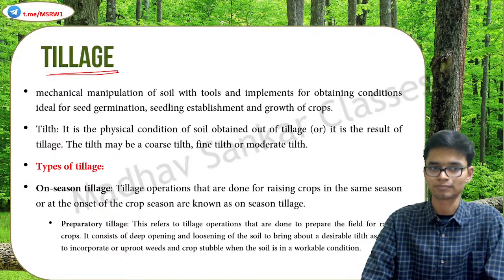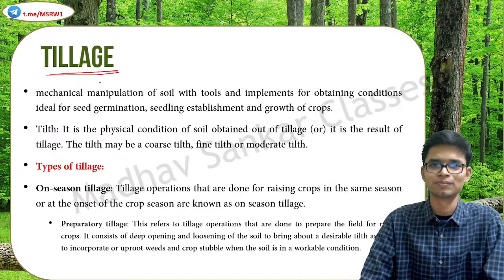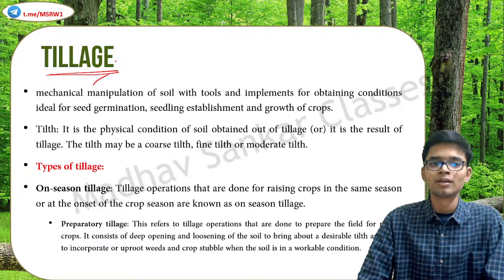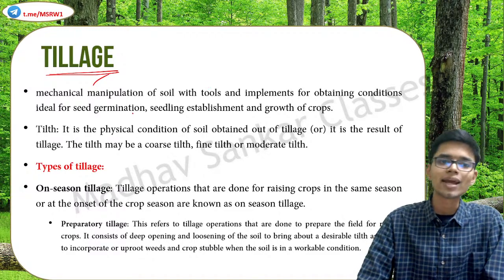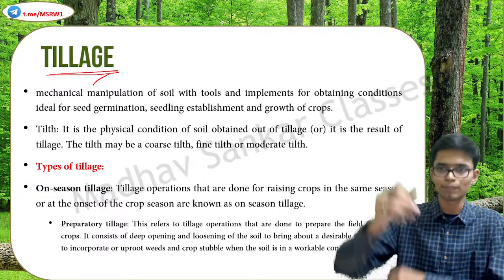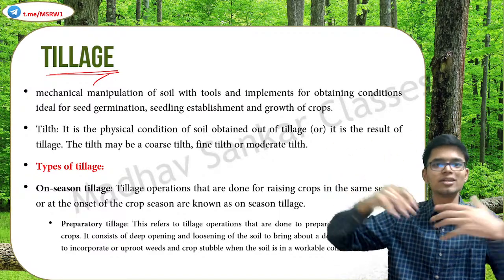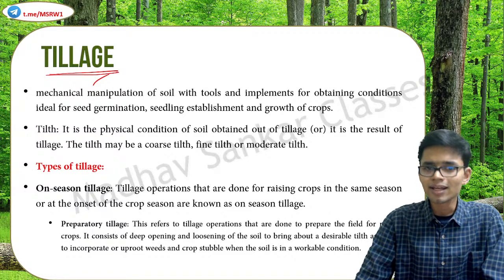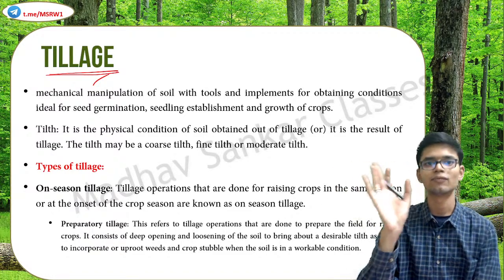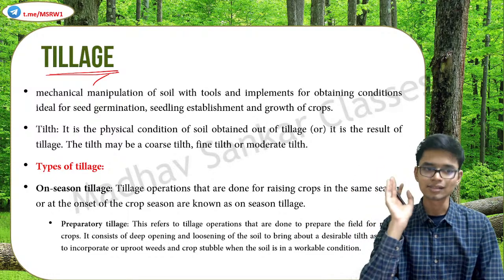Now some associated terms with agriculture, starting with tillage. You have a basic understanding of tillage but we will look at it in more depth. The mechanical manipulation of soil is known as tillage — it can be plowing or other kinds of machinery. Any kind of mechanical manipulation of soil for obtaining ideal conditions for plant growth is known as tillage.